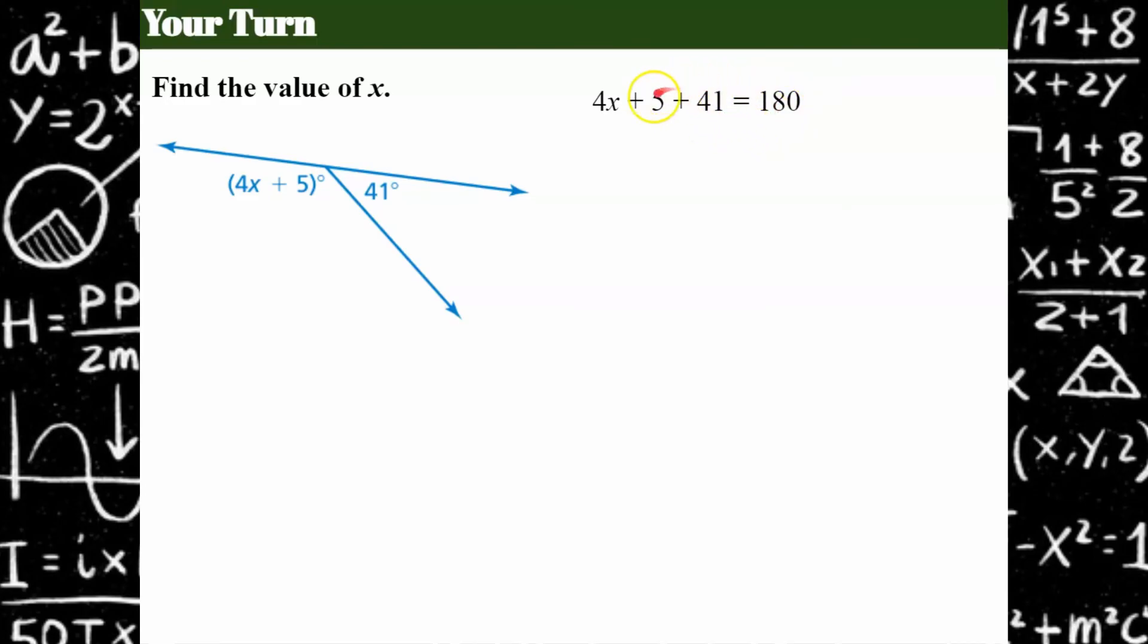These are what we call like terms. We can add these together. So that's what I'll do first. 5 plus 41 is 46. Now subtract 46 from both sides. 4x equals 134. Divide both sides by 4, and x is equal to 33.5.